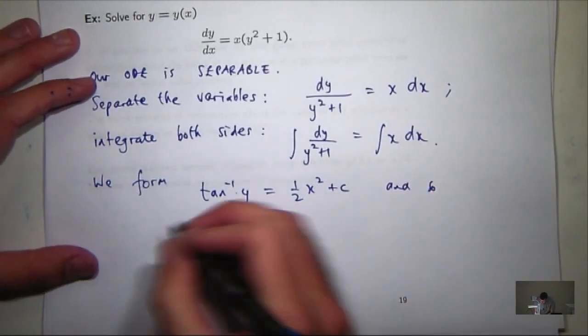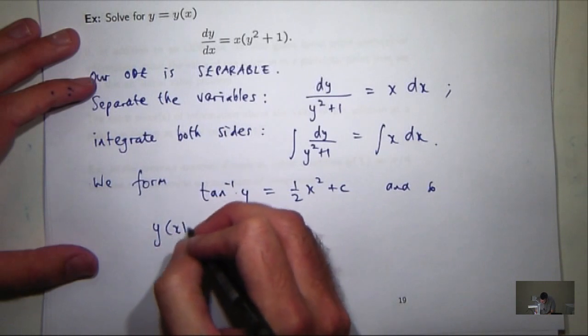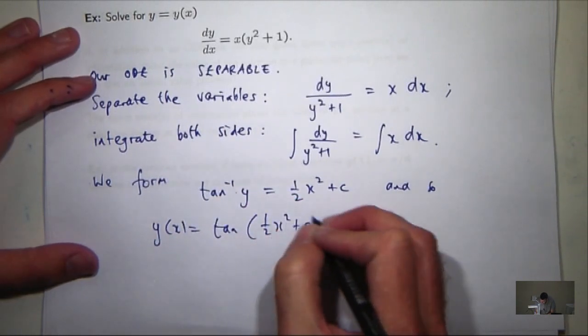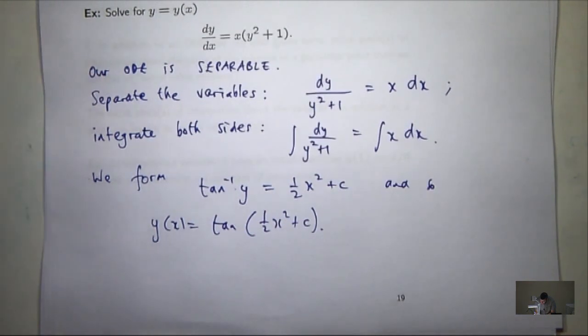So this solution is not defined for all x. What happens is, we all know that tan of x has a vertical asymptote, right? Let's say x equals pi over 2. This will have a vertical asymptote as well. So this solution won't extend all the way across the real line, its domain is restricted.